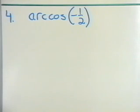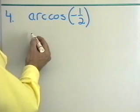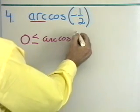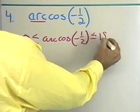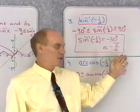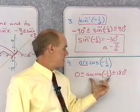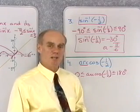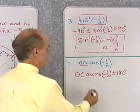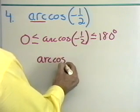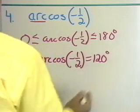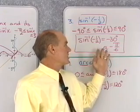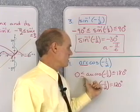Here's another problem: we want the arc cosine of negative 1/2. Arc cosine and inverse cosine mean the same thing. The restrictions on inverse cosine are: 0° ≤ arc cosine(−1/2) ≤ 180°. Whereas inverse sine is restricted to negative 90 to positive 90, inverse cosine is restricted to 0 to 180. The angle whose cosine is negative 1/2 that lies between 0 and 180 must be in quadrant 2. The reference angle is 60°, so the angle in quadrant 2 with cosine of negative 1/2 is 120 degrees. Punch negative 0.5 into your calculator and press inverse cosine — it will output 120 degrees.